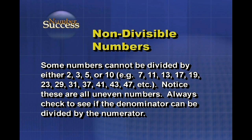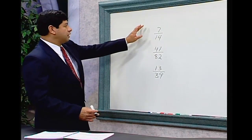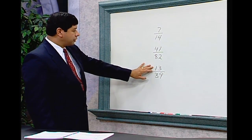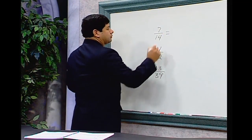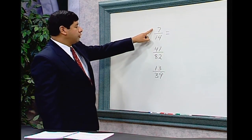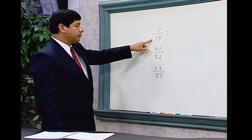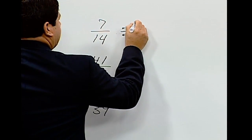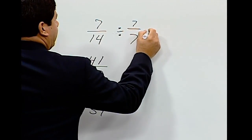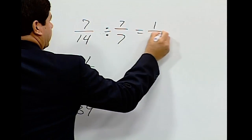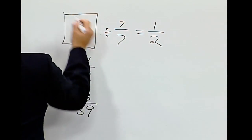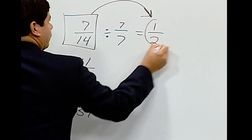Always check to see if the denominator can be divided by the numerator. Example: 7 over 14. Check if the numerator divides into the denominator — it does. Divide both numerator and denominator by 7. 7 divided by 7 is 1, and 14 divided by 7 is 2. So 7 over 14 reduces to 1 half.